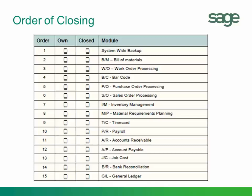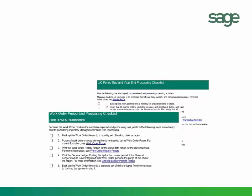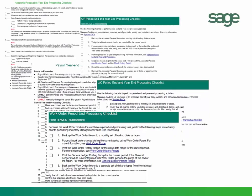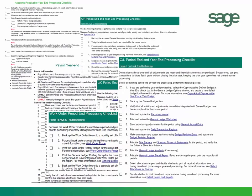You'll notice the very last step is to post and close your general ledger. After you've reconciled everything and reconciled your general ledger, then you're ready to close it. There are a number of checklists available in the various modules, and it can be very helpful for those involved in closing to have these module checklists available. You can find them right in the help.